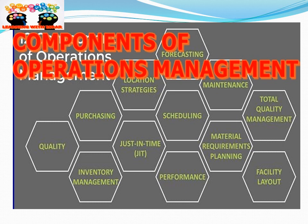We also explain Operations Management through its components. As you can see in the picture, it includes Forecasting, Location Strategy, Maintenance, Total Quality Management, Scheduling, Purchasing, Quality, Just-In-Time, Material Requirement Planning, Facility Layout, Performance, and Inventory Management. These are all things which are under Operations Management.